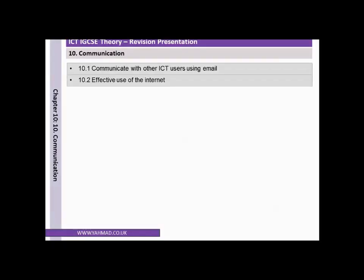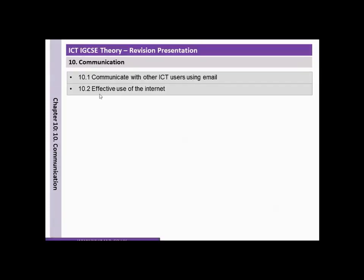We are now going to be looking at Chapter 10, Communication, from the CIE ICT IGCSE course. We are going to be looking at 10.1, Communicate with other ICT users using email, and 10.2, Effective use of the internet.